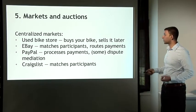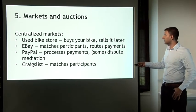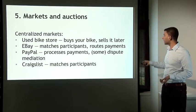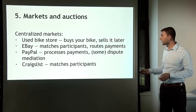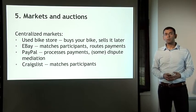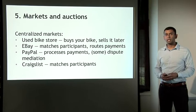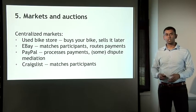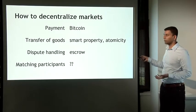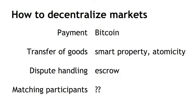Another model is eBay, which only matches participants and routes payments. PayPal is a payment processor — they don't match participants, but they do perform a limited level of dispute mediation. The Craigslist model is where the platform isn't involved in the exchange at all except for matching participants. We've identified several different functions these markets give participants — payments, transfer of goods, dispute mediation — but we haven't yet seen how to match participants who want to take different sides of a trade.